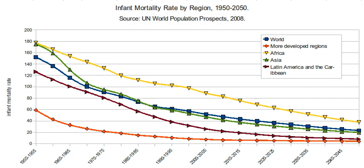Moreover, increased aggregate household incomes will produce better health facilities, water, and sewer infrastructures for the entire community.